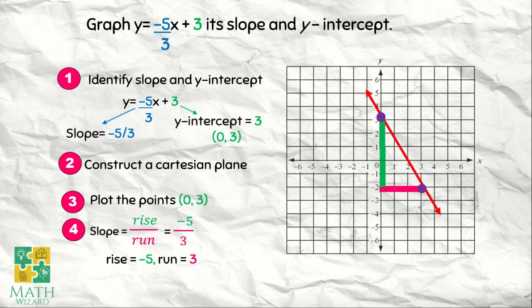Connect the two dots. Therefore, the graph of y is equal to negative 5x over 3 plus 3, its slope and y-intercept is this one. The first point is 0 and 3, and the other point is 3 and negative 2.